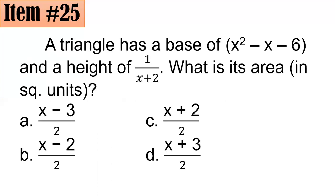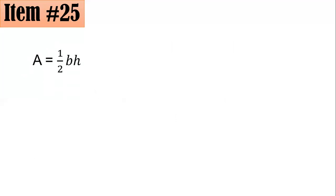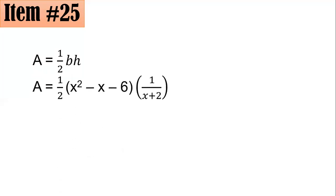Item 25: A triangle has a base of x squared minus x minus 6 and a height of 1 over (x plus 2). What is its area in square units? The formula for the area of a triangle is one-half base times height, so we have one-half times (x squared minus x minus 6) times (1 over (x plus 2)).